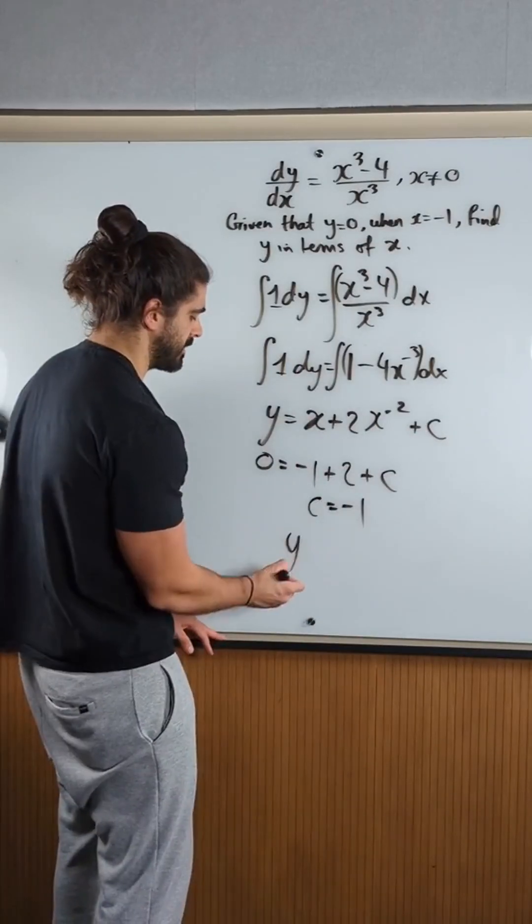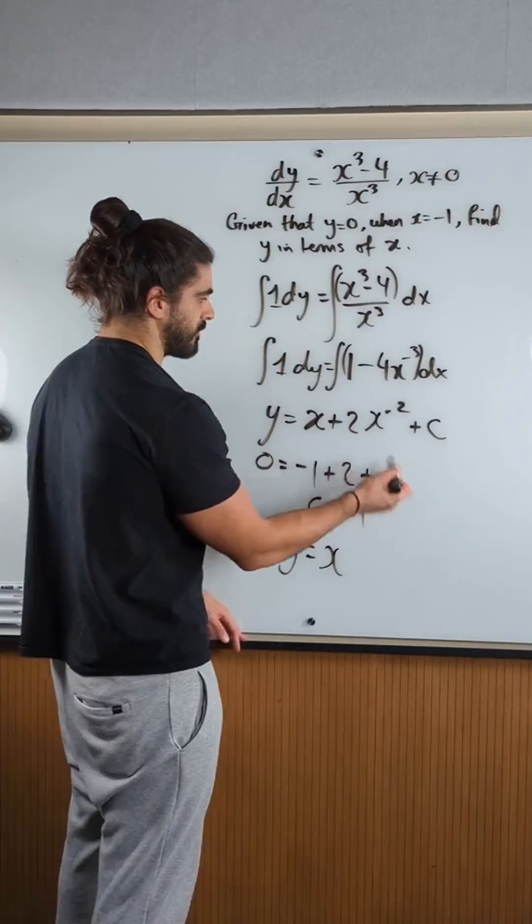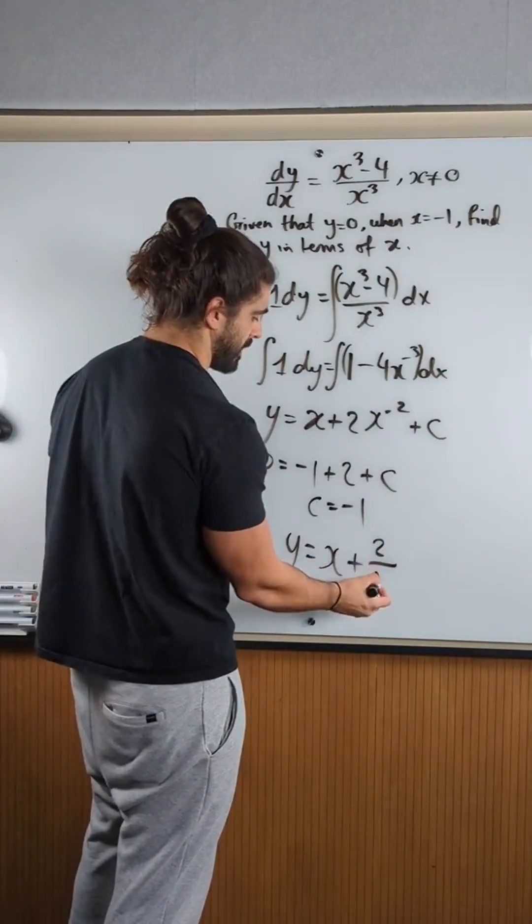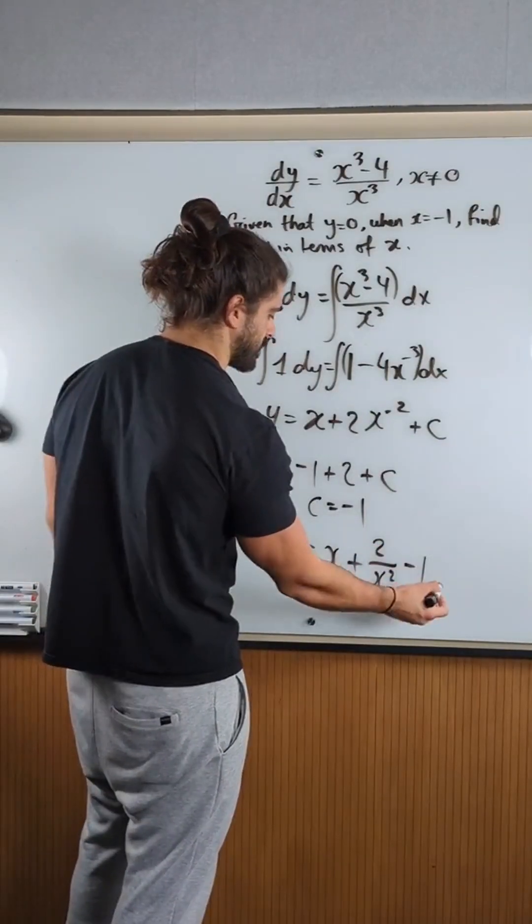So our equation is y is x. I would rather write that as a fraction again just because the form for this was a fraction. 2 over x squared minus 1.